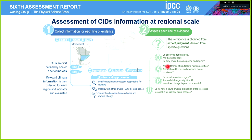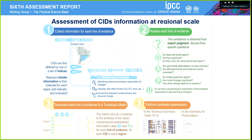For example, we need to ask ourselves: do the observed trends agree? Are they significant? Do they cover the same period — which is very relevant for variables like precipitation? Are the past trends attributable to human activity, and are these consistent with what we observe? And last but not least, do the model projections agree? Are these changes significant for this region? If we are able to assess all of this, then we can trace the whole process in a traceback matrix — which was quite a task — in which for each region we noted exactly which lines of evidence we were using and the confidence for each of them. We then performed the final assessment using tables like the ones Alex showed before.